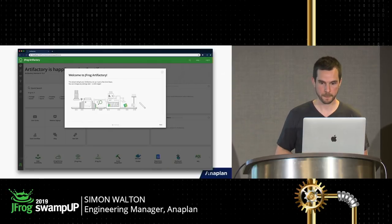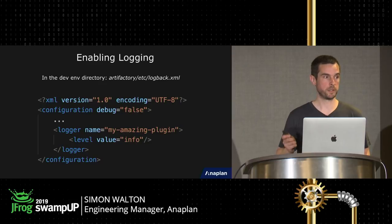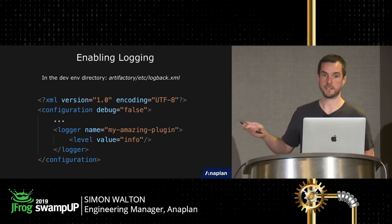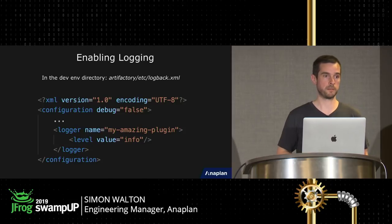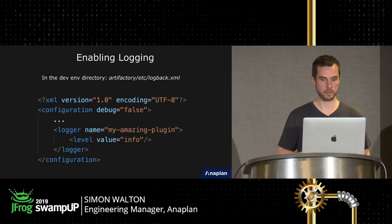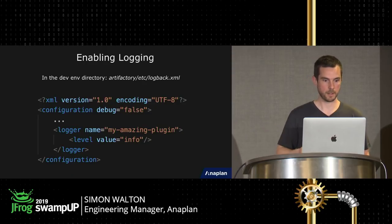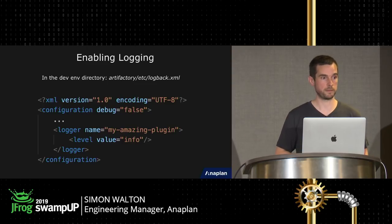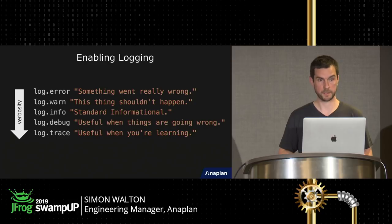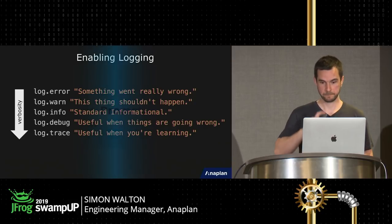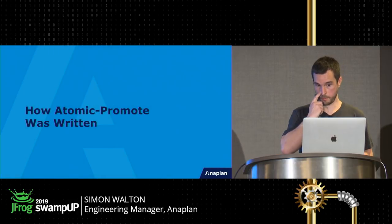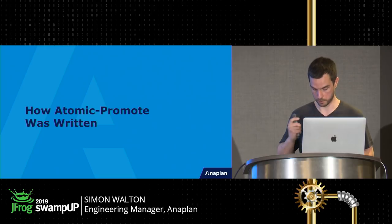One thing you'll want to do when you start is enable logging. In a production use case you'd have a log level of info or similar, but for development you probably want debug or trace. You just need to add a new logger entry into the `logback.xml` file to get logging. That took us a long time to figure out.